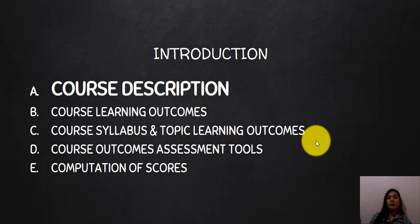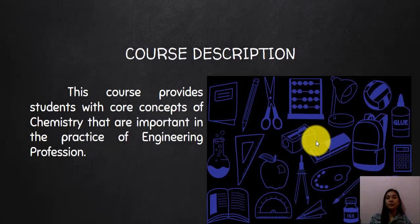This course consists of five parts. The first one is the course description. It says the course provides students with core concepts of chemistry that are important in the practice of the engineering profession. Hopefully by the end of this course you will have learned a few important aspects of chemistry that are related to engineering practices.